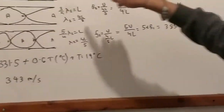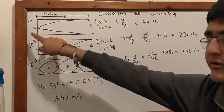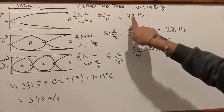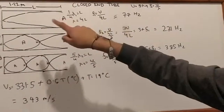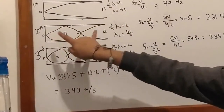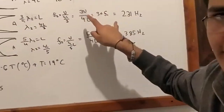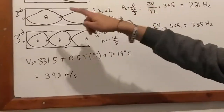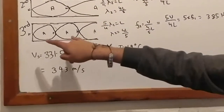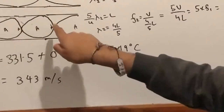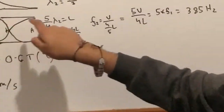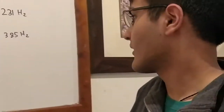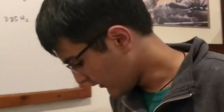In the first harmonic, we want to see a node and an anti-node at 77 Hz, two nodes and two anti-nodes at 231 Hz for the second harmonic, and three nodes and three anti-nodes for our third harmonic at 385 Hz. Now let's go and show a demonstration of the Kundt tube.